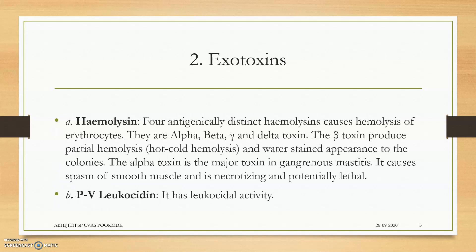Moving to the exotoxins of Staphylococcus aureus. The first one is hemolysin — the enzyme or toxin which causes the breakdown of RBCs. The beta hemolysin produces partial hemolysis, which is actually an irony. For hemolysis and hemolytic property, you can see my video on hemolysis and the CAMP test.